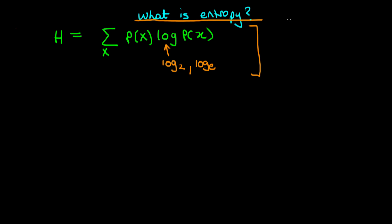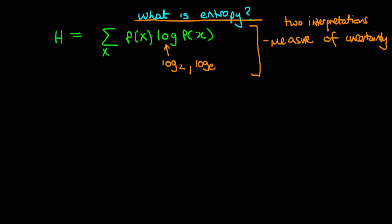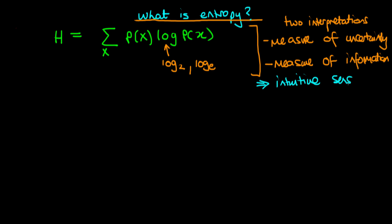In this video I'm going to discuss two interpretations of entropy. The first is as a measure of uncertainty — if you have a higher amount of entropy there is more uncertainty in the system. The second interpretation is as a measure of information content. After discussing these two interpretations, we're going to discuss why this particular mathematical formula for entropy is sensible and makes intuitive sense.